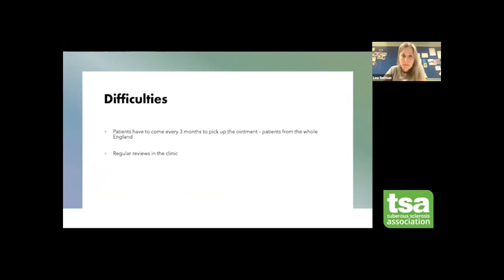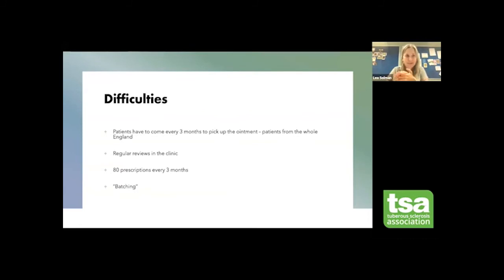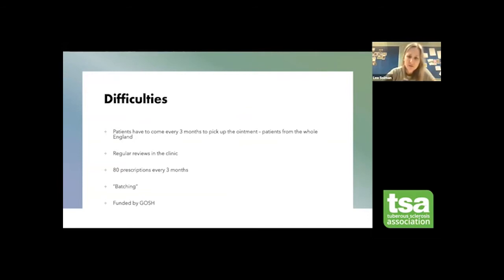The reason I'm explaining all of this is that hopefully soon there will be a commercially prepared gel formulation in a tube — approximately 0.2% — that won't need to be made in batches. A more stable preparation will likely be superior to ours. Currently patients have to come every three months to collect the ointment, and I write 80 prescriptions every three months as a batch. We get funding from GOSH, so we don't need NHS England approval — other trusts have to fill in many forms to get it funded.